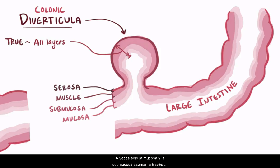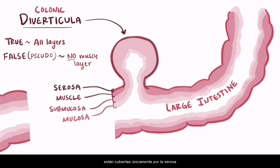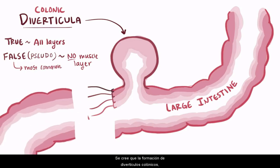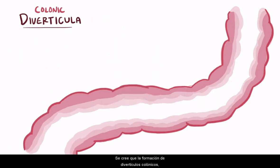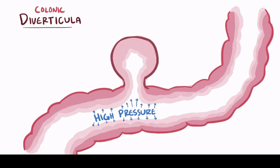Sometimes only the mucosa and submucosa poke through the muscle layer, and these would be called pseudo or false diverticula, where the muscle layer isn't included and the mucosa and submucosa are covered only by serosa. Most of the time, diverticula in the large intestine are false diverticula. It's thought that their formation is a result of high pressures that literally push on the walls such that they bubble out and form these pouches.